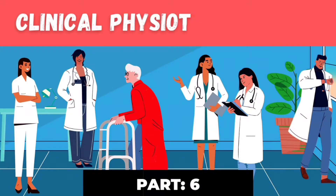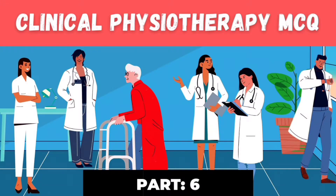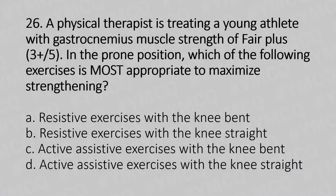Hello, welcome to Part 6 of Clinical Physiotherapy MCQ Series. Let's move to our 26th question. A physical therapist is treating a young adult with gastrocnemius muscle strength of 5-plus, in the prone position. Which of the following exercises is most appropriate to maximize the strengthening?